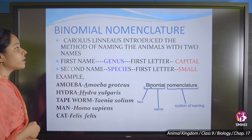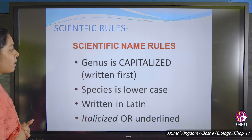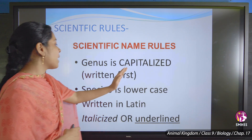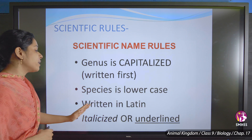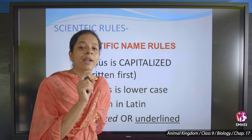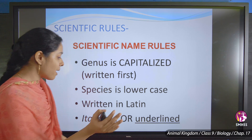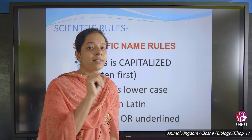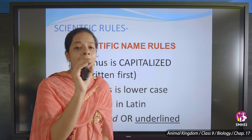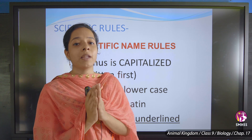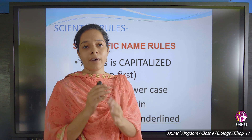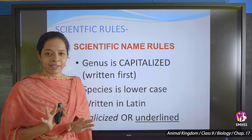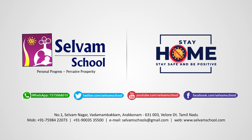The binomial nomenclature was introduced by Carolus Linnaeus. The scientific rules state: the genus is capitalized and written first, and the species name is in lowercase and written in Latin or italics. When writing by hand, you cannot italicize, so you must underline both the genus and species names. This covers the animal kingdom classification, concept of binomial nomenclature, and how to write scientific names. Thank you.